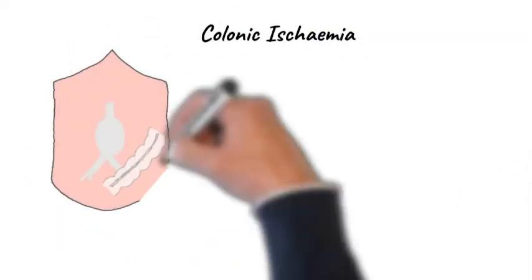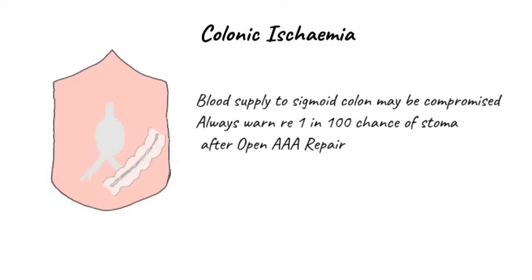During an open abdominal aortic aneurysm repair, the inferior mesenteric artery is generally sacrificed, and occasionally this can lead to a critical reduction in blood supply to an area of the sigmoid colon, causing colonic ischemia. This will often manifest as a rising lactate and some abdominal distension, so you always need to keep it in the back of your head when a patient has abdominal distension after an AAA repair. There is about a 1 in 100 chance the patient may end up requiring a stoma post-operatively.